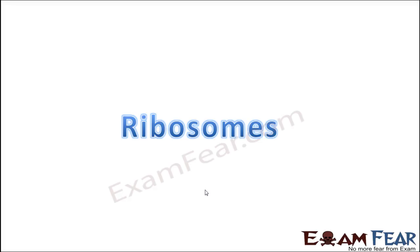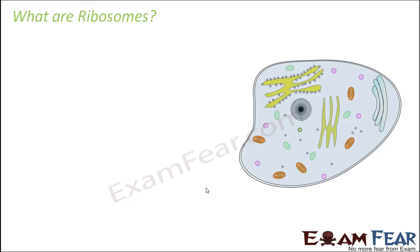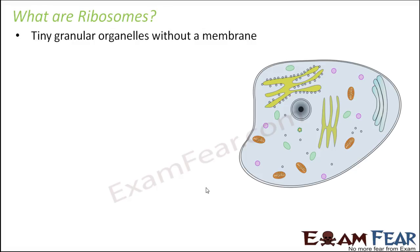There are some small structures present everywhere called ribosomes which help all these cell organelles. They are common to all of them - if ribosomes stop performing, all other cell organelles will not be able to do their job. Ribosomes are tiny granular organelles without a membrane. You would have seen these small dotted structures shown alongside the endoplasmic reticulum and mitochondria - those are ribosomes.